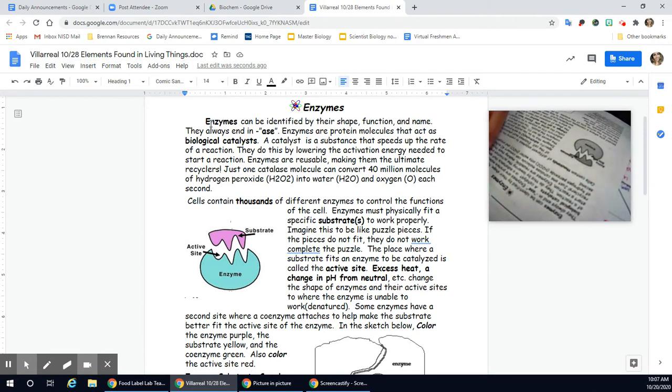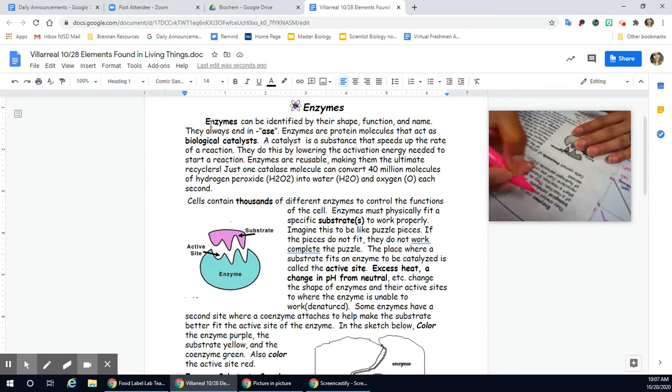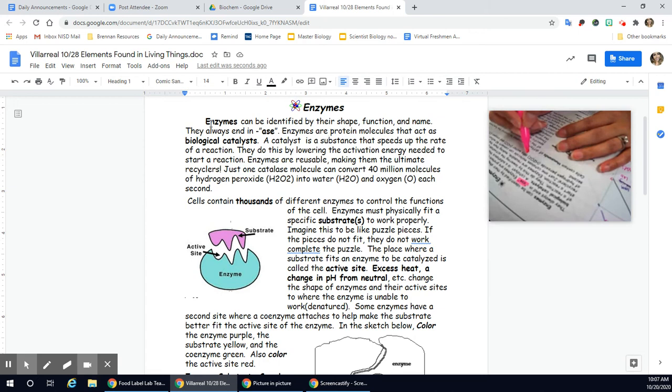So I am going to read through it with you. I am going to go ahead and grab my highlighter. Enzymes. Enzymes can be identified by their shape, function, and their name. They always end in ACE, A-S-E. Enzymes are protein molecules that act as biological catalysts. So enzymes, I'm going to circle that. They are proteins.